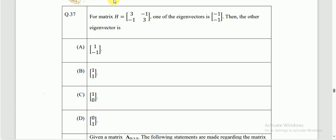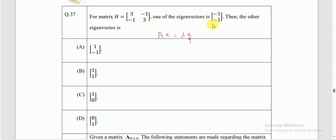Let's proceed with the given information. The basic concept of eigenvectors is that if we apply a vector X on matrix A, we look for vectors that remain in the same direction as X, satisfying AX = λX. We call λ the eigenvalue and such vectors are called eigenvectors. Since X is given, we will have two eigenvectors corresponding to each eigenvalue. One eigenvector X₁ is given and we have to find the other.